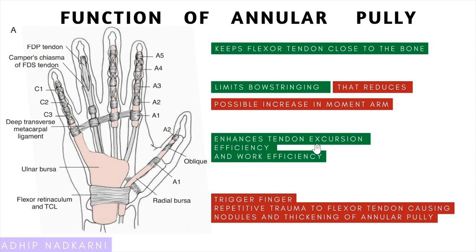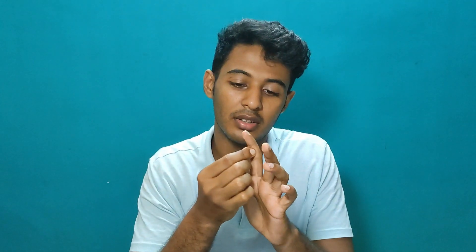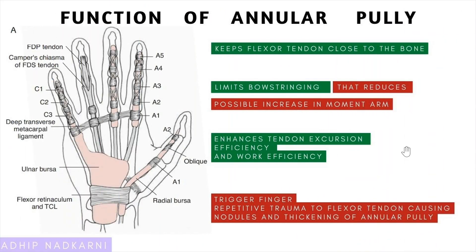A clinical aspect related to the annular pulley is trigger finger. With repetitive trauma on the flexor tendon, nodules can form on the tendon and the annular pulley can thicken. When the tendon tries to glide past the thickened pulley with a nodule, it gets locked underneath during flexion. It becomes very hard to extend — you have to slowly passively extend the finger so the nodule slips and unlocks, which is the trigger finger or stuck flexor tendon phenomenon.